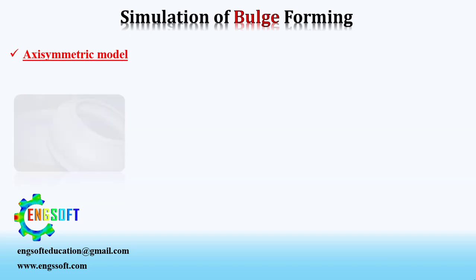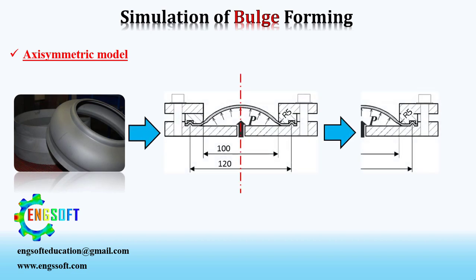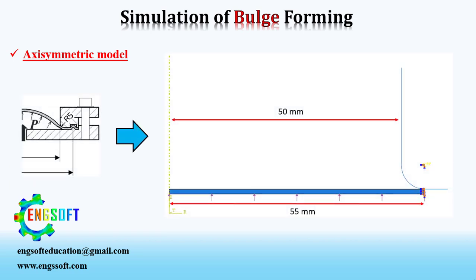Now let's talk about the simulation of bulge forming process in Abaqus software. Since the loading and geometry of the bulge forming process are axially symmetric, we can use the axisymmetric feature of Abaqus software. The axisymmetric analysis allows you to analyze a 3D problem which is rotationally symmetric about an axis, and the computational cost reduces significantly. As a simple example, to simulate the bulge forming process we just need two parts — a die and a blank — and with appropriate loading and boundary conditions, the process can be simulated.